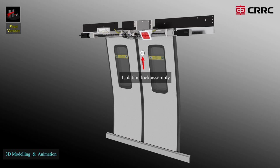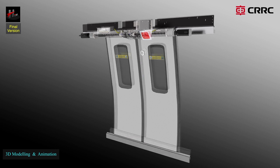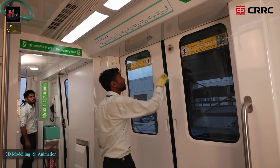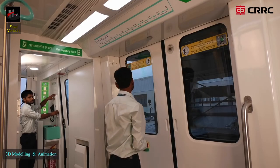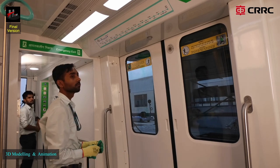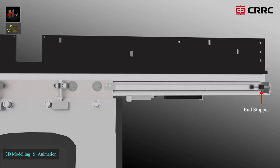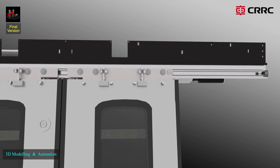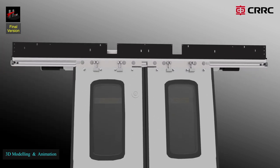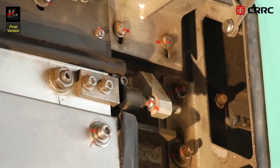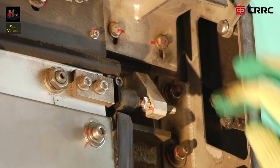The isolation lock assembly: in case a door is faulty, the isolation lock assembly of the faulty door can be operated with a square key to isolate the faulty door. After isolation, the door remains in closed condition. End stoppers: two end stoppers, one on the right and one on the left, are provided on both ends of the loading guide rail outside the saloon doors. They control the opening width of the door leaves, and adjusting the end stoppers can change the door opening width.